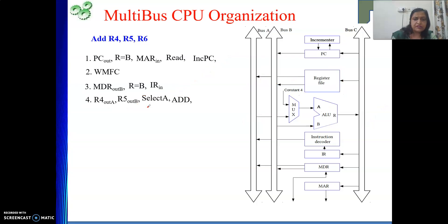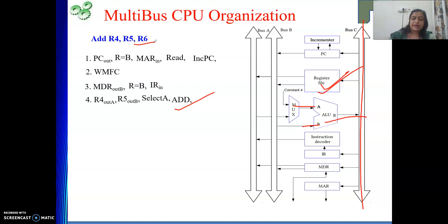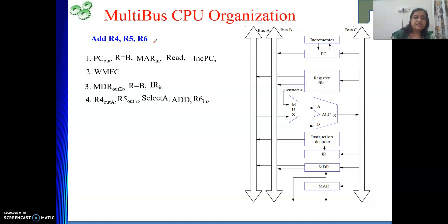After the inputs are available and we have given Select A, we give the signal ADD. So the operation is done. The result is placed on bus C. From there, we just give the result to R6 by writing R6 in. This much is required to perform the execution, and our instruction is complete.